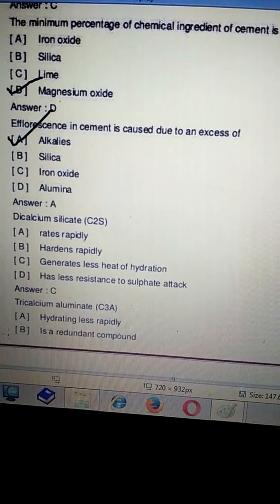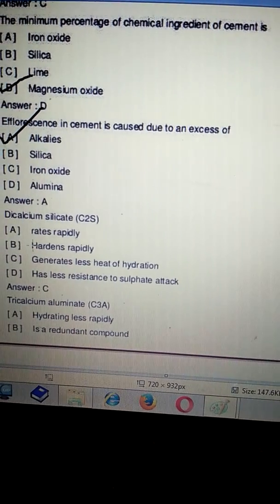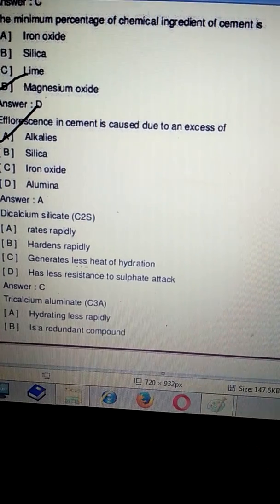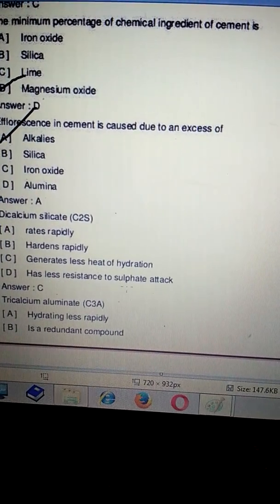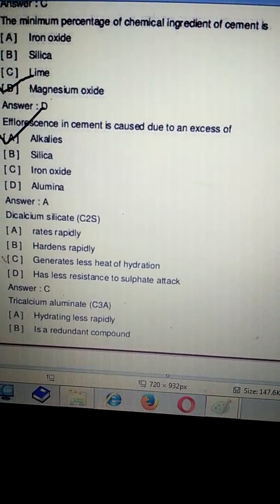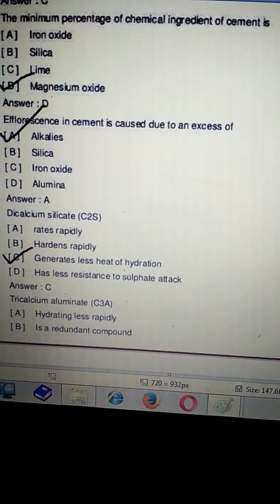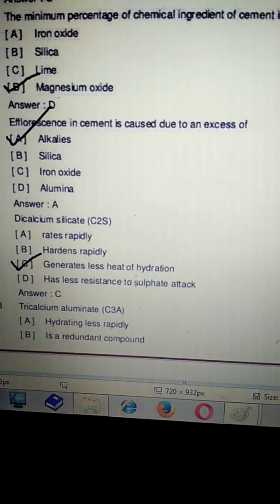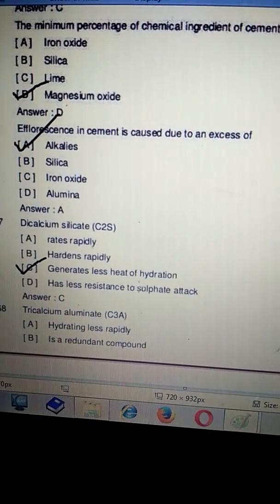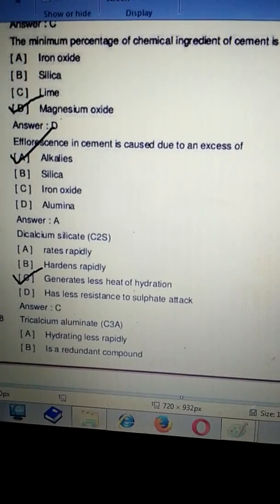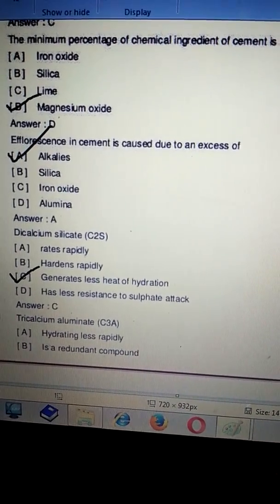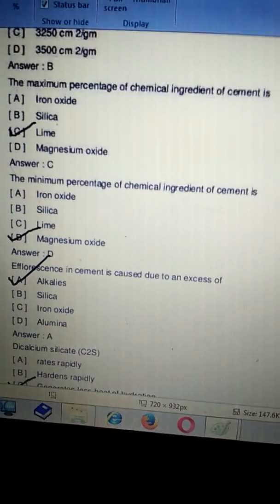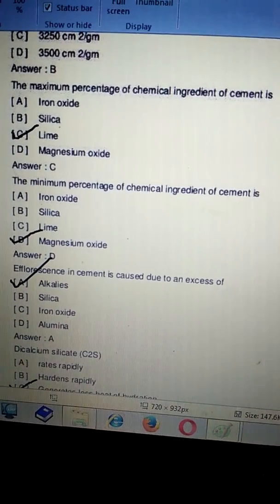Dicalcium silicate - hardens rapidly, generates less heat of hydration, or has less resistance to salt attack? The correct answer is C. It generates less heat of hydration. This is a very important question.